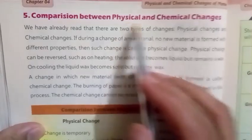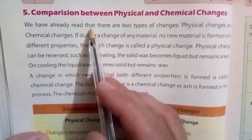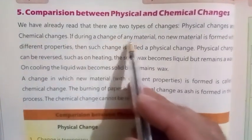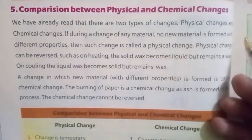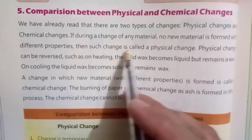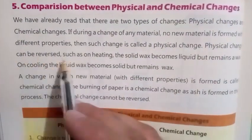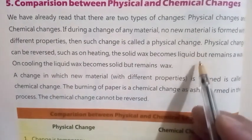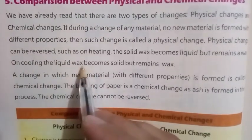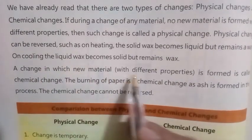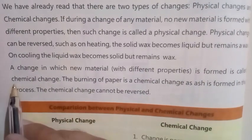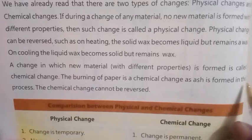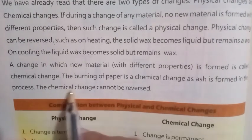There are two types of changes: physical changes and chemical changes. If during a change of any material no new material is formed with different properties, then such a change is called a physical change. A physical change can be reversed — for example, on heating, solid wax becomes liquid but remains wax; on cooling, liquid wax becomes solid but remains wax. A change in which a new material with different properties is formed is called a chemical change. The burning of paper is a chemical change as ash is formed. A chemical change cannot be reversed.